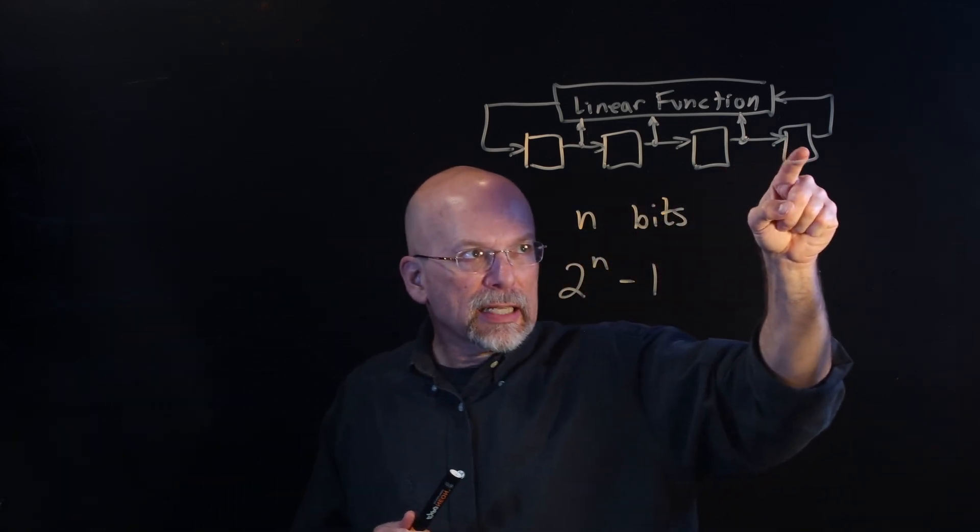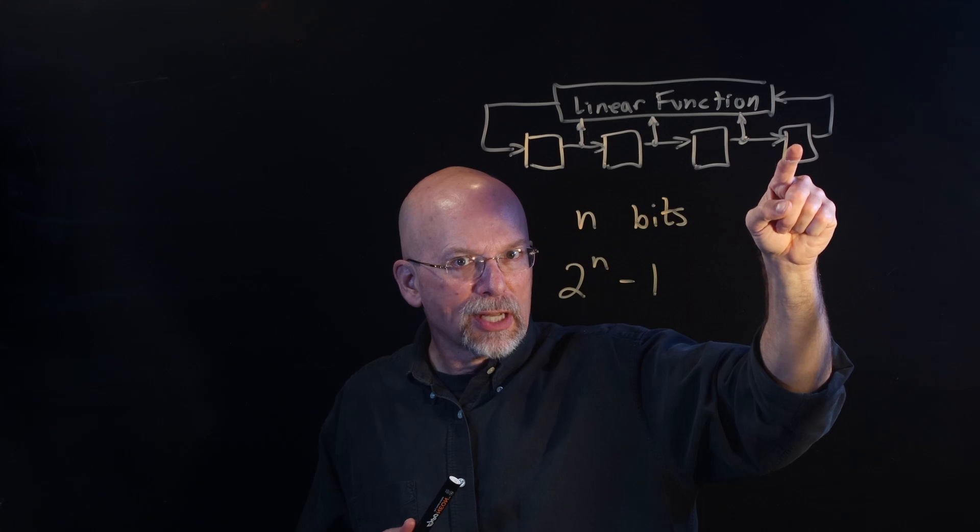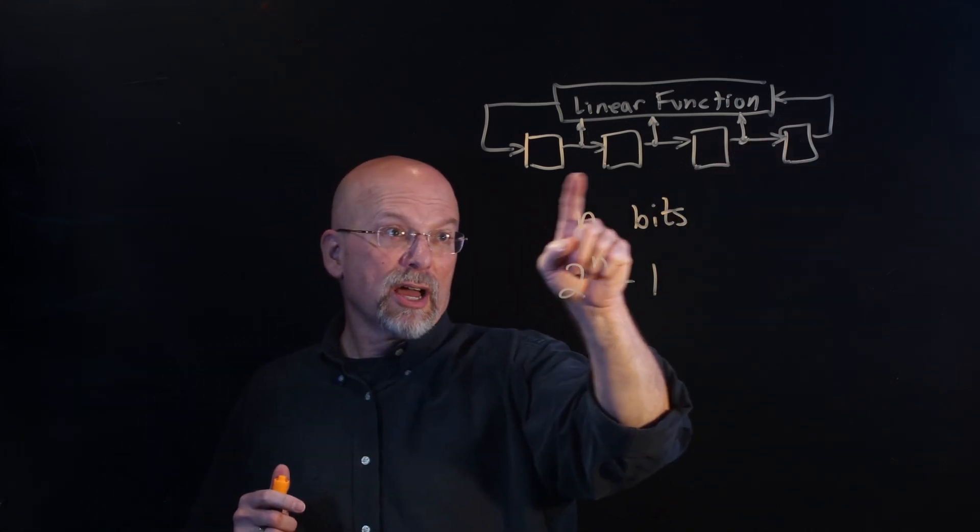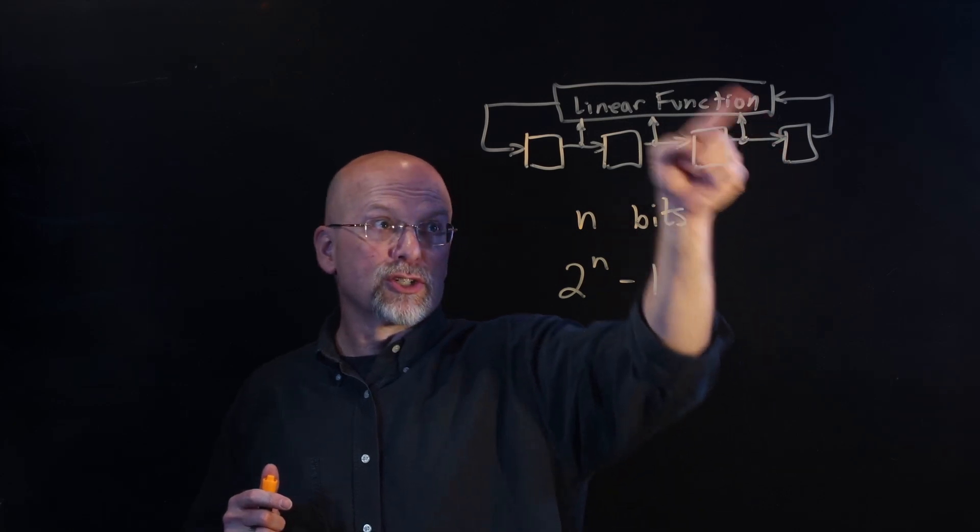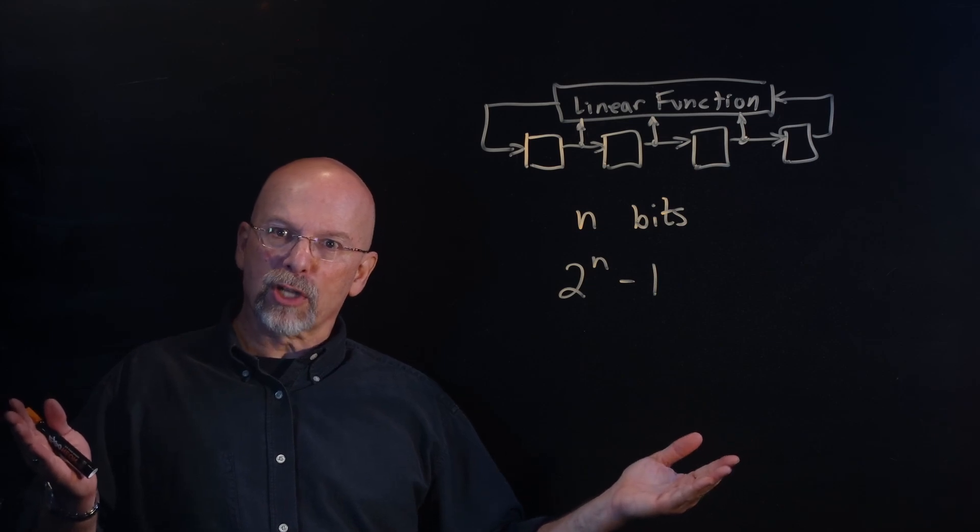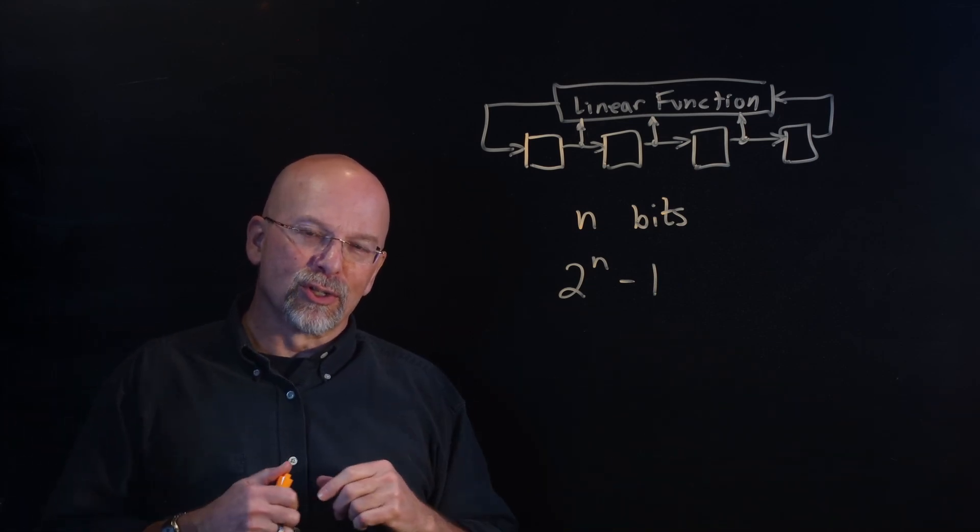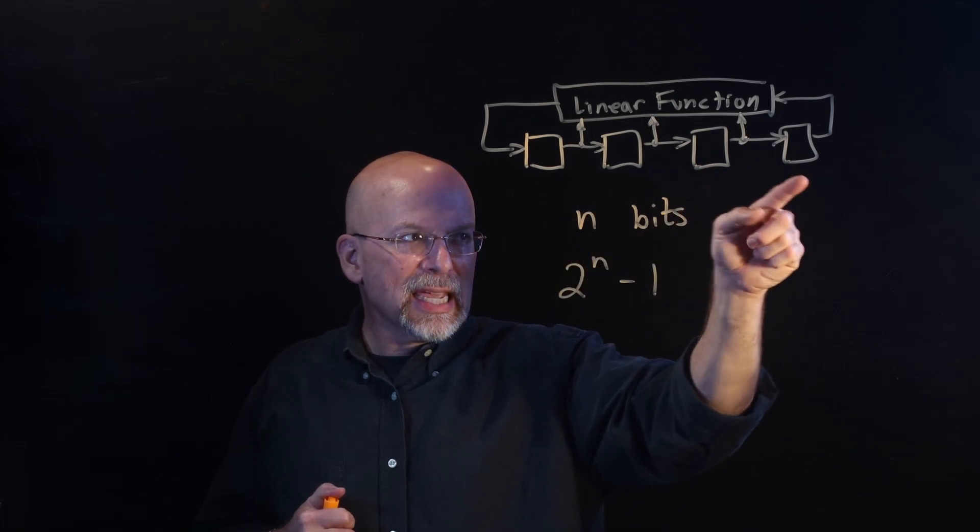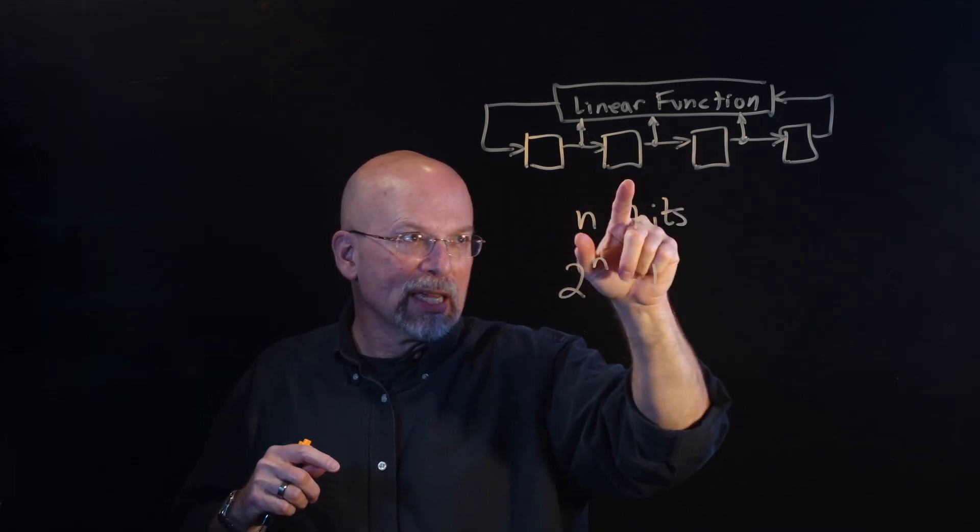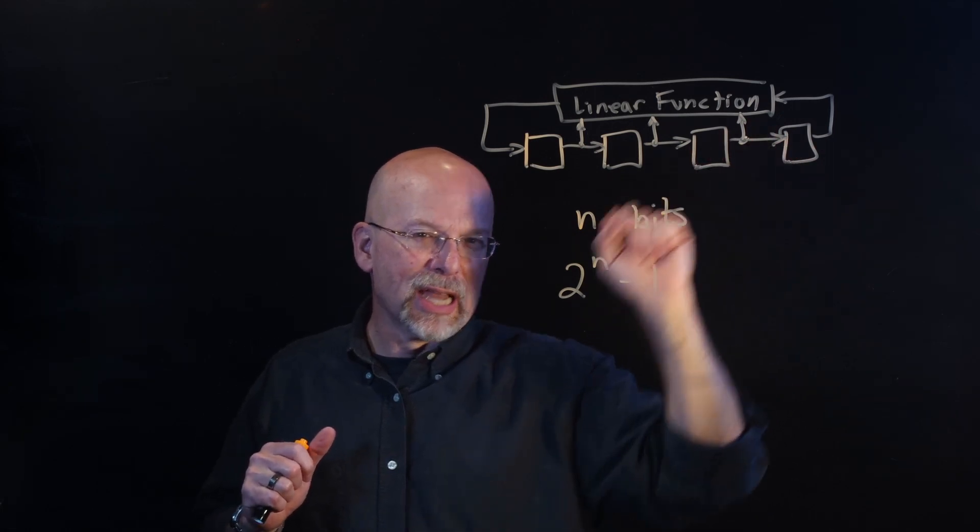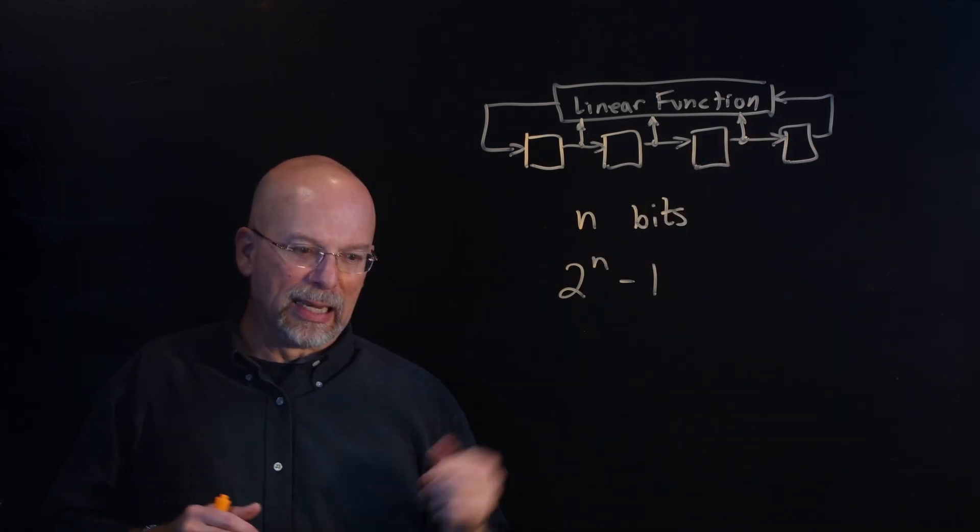In other words, before you had the same value in those registers, you would have to hit that clock pulse 2 to the n minus 1 times. Our list, if we simply watch this last bit here, we can generate our list from it. So, the combination of the number of bits in our shift register and a properly designed linear function will effectively give us that list that goes on billion, billion, billion, billion times. We start with a seed, which is our initial value inside the bits of the shift register, and we watch this last bit, and it will show us that list.